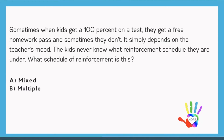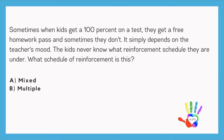Sometimes when kids get 100% on a test they get a free homework pass, and sometimes they don't — it simply depends on the teacher's mood. The kids never know what reinforcement schedule they are under. We have one behavior, two schedules of reinforcement, and it's not clear to the learner. There's no clear reason why, so this is going to be a mixed schedule of reinforcement.